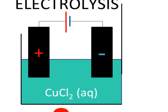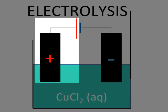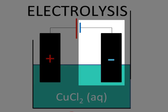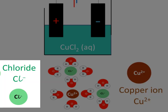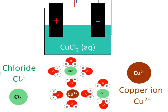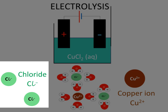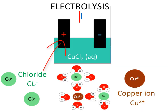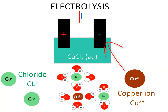The battery charges the carbon electrodes. The electrode connected to the battery's positive terminal becomes positively charged, and the electrode connected to the battery's negative terminal becomes negatively charged. The copper ions and chloride ions in the copper chloride solution complete the electric circuit by moving to the electrodes. The negative chloride ions are attracted to the positive electrode, and the positive copper ions are attracted to the negative electrode.